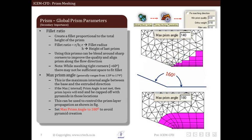Now in the first case where maximum prism angle is set to 140 but two surfaces are at 160 to each other so prism layers end abruptly. Whereas in the second case maximum prism angle is set to 180 so prism layers continue and merge to the adjoining surface. We can see it in this figure. It is recommended to set the maximum prism angle to 180 to avoid creation of pyramid elements.